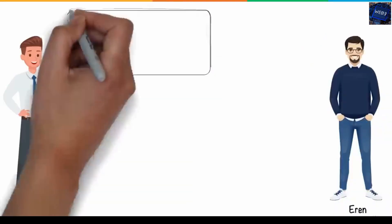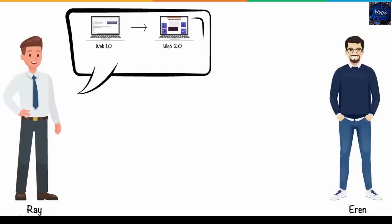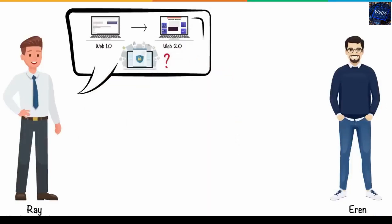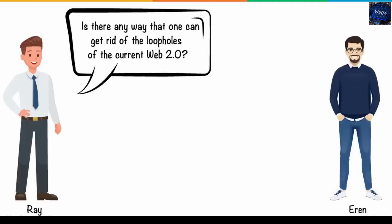Ray was fascinated by how the internet has evolved and how it works amazingly. But at the same time, he was concerned about the lack of privacy offered by it. Ray, out of his concern, asked Aaron, is there any way that one can get rid of the loopholes of the current Web 2.0?